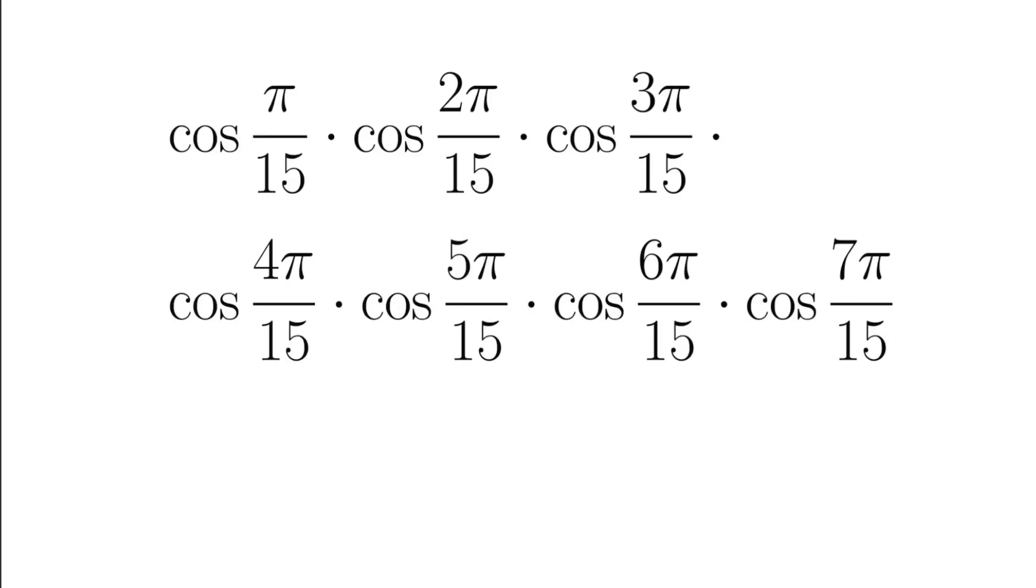In this video, I'm going to show you a quick way to calculate this product: cosine pi over 15 multiplying by similar terms up to cosine 7 pi over 15.